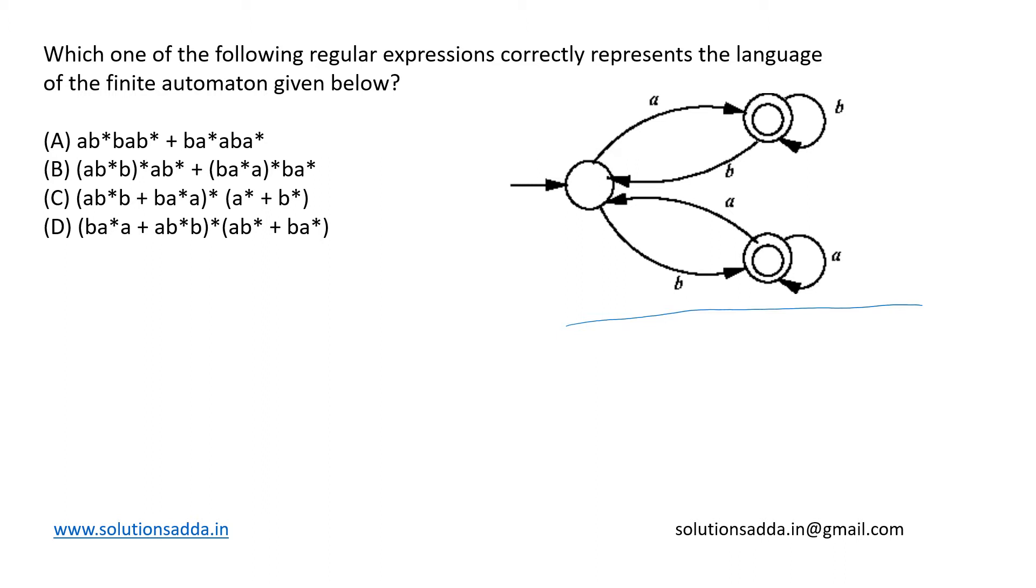Let us first name these states as q0, q1, and q2. Now we can see that q0 is our initial state while we have two final states, q1 and q2.